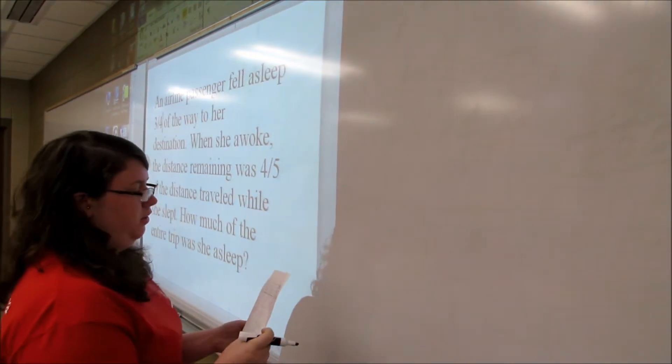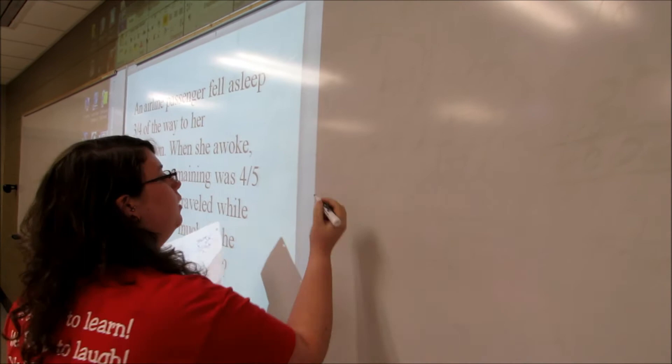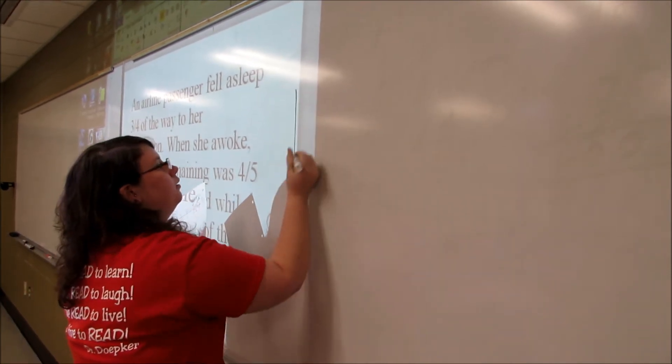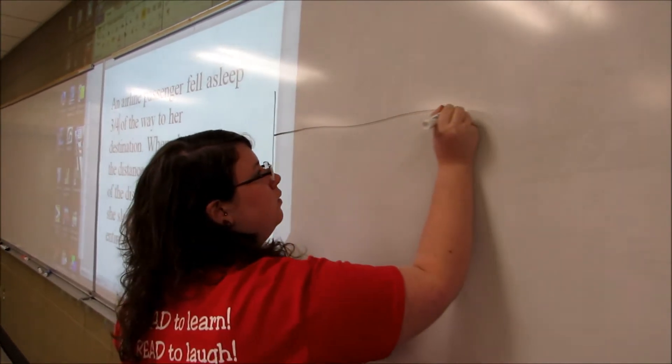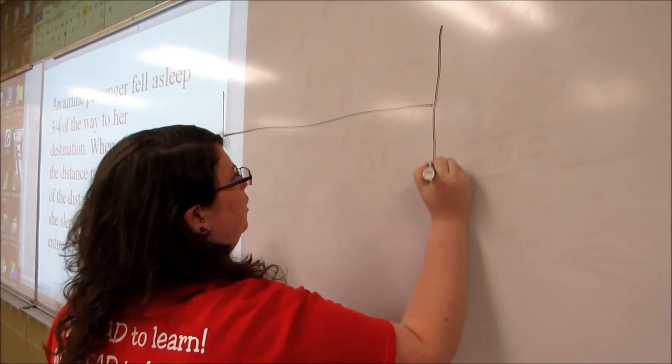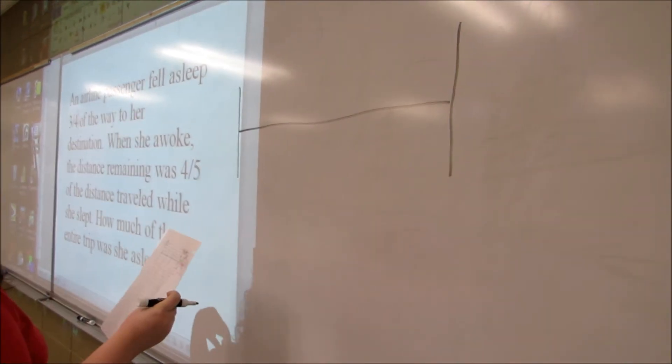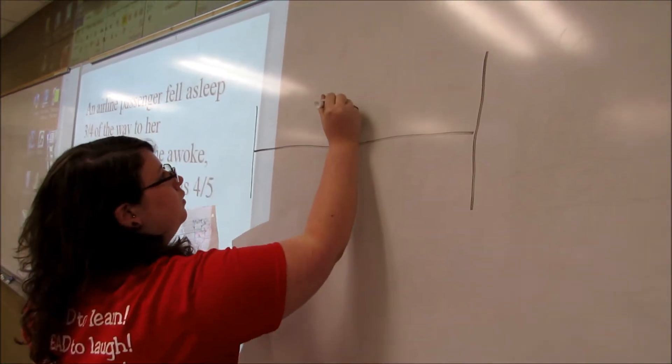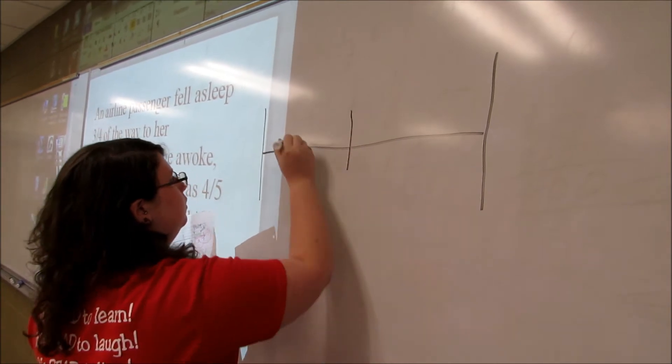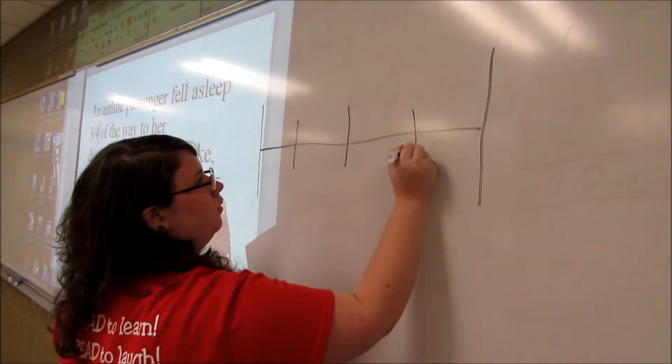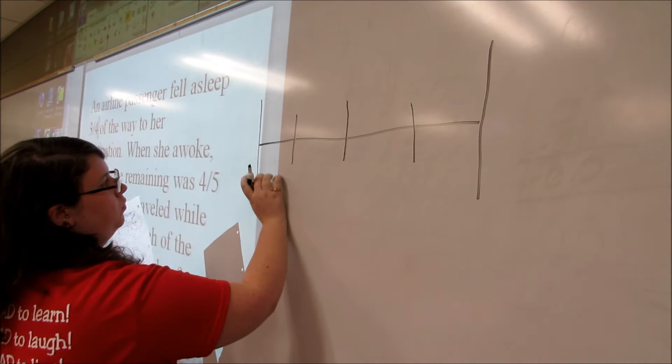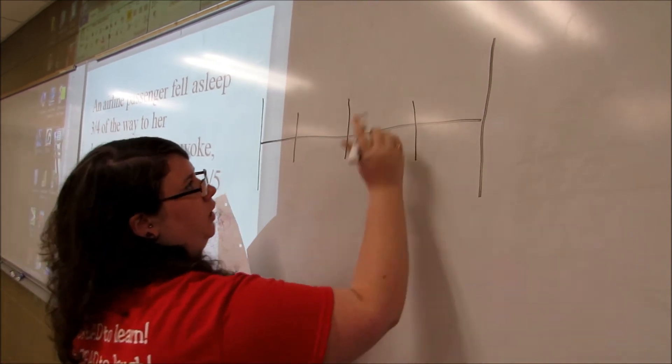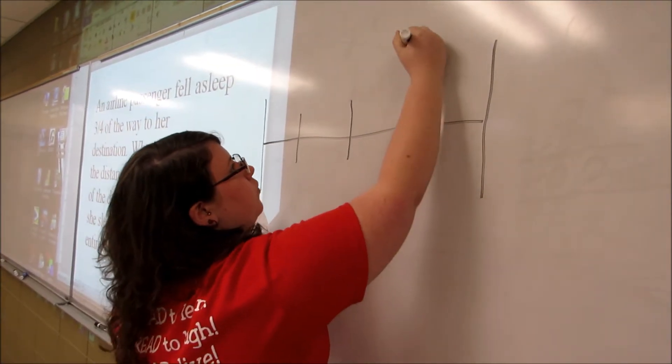So in the beginning it says that she fell asleep three-fourths of the way, so we're going to make our line here. You know that she fell asleep three-fourths of the way, so we're going to go one, two, three, so that's three-fourths. That's one, two, three, which means she fell asleep right here.